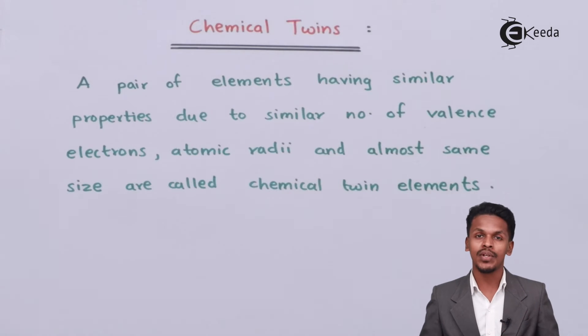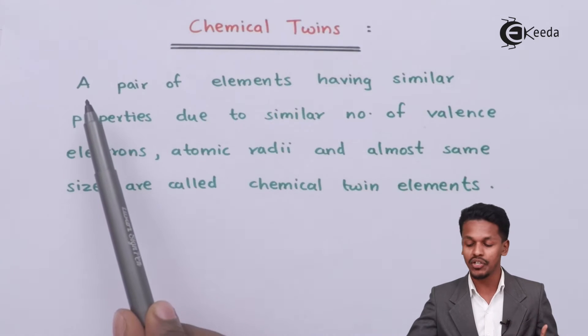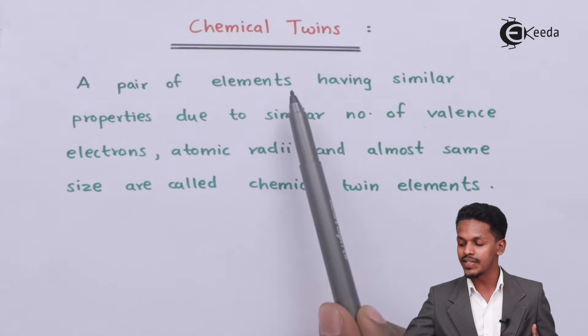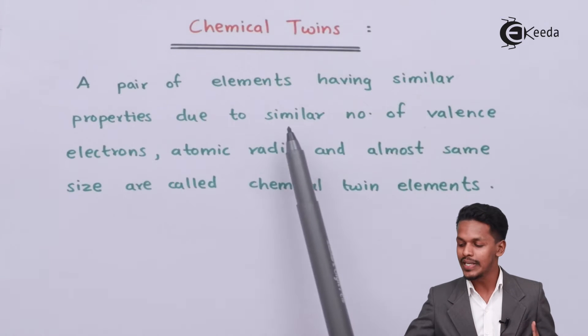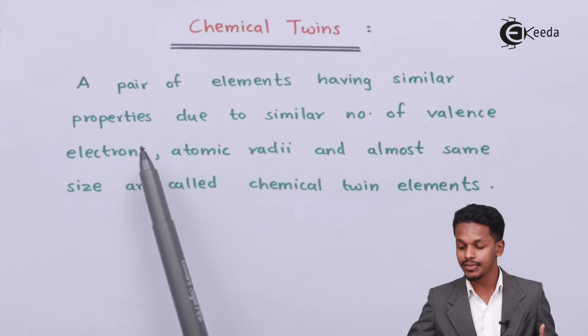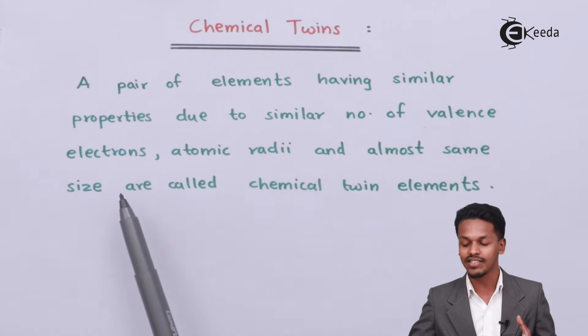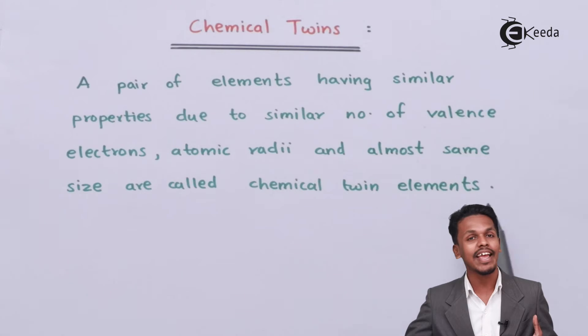What are chemical twins? A pair of elements having similar properties due to similar number of valence electrons, atomic radii, and almost same size are called chemical twin elements.